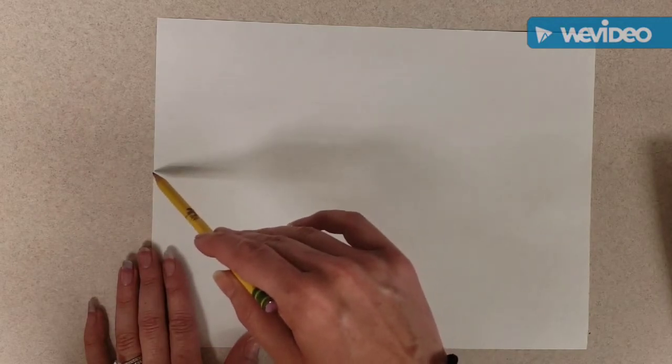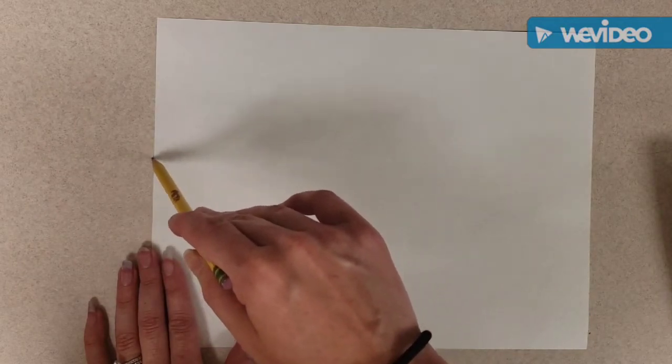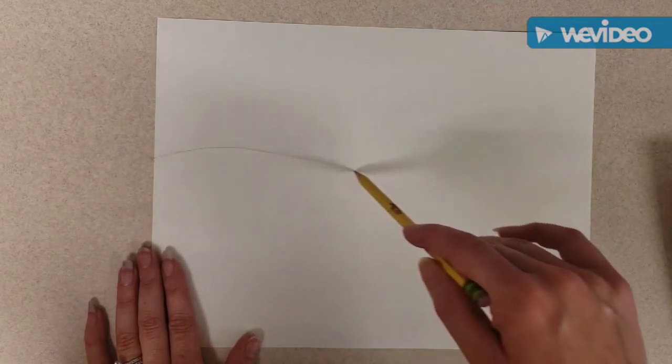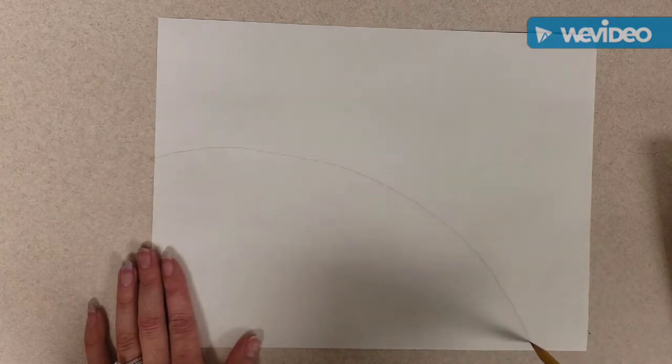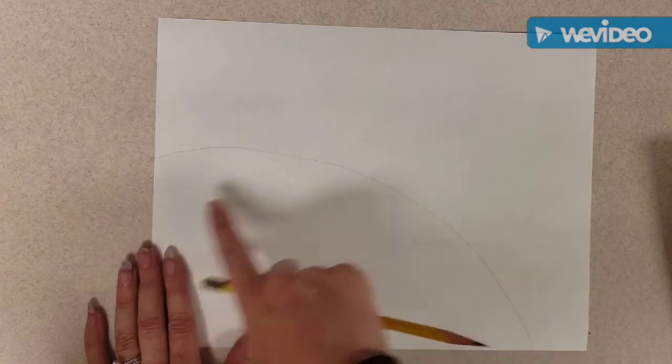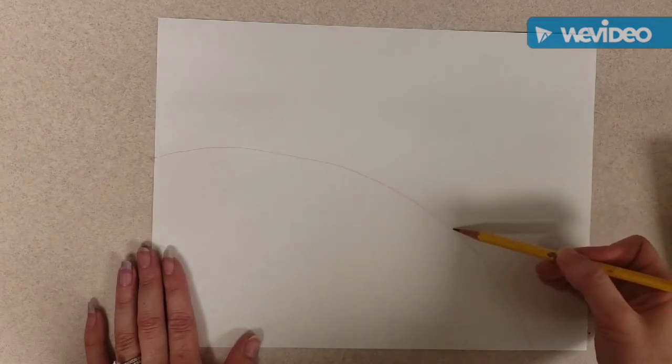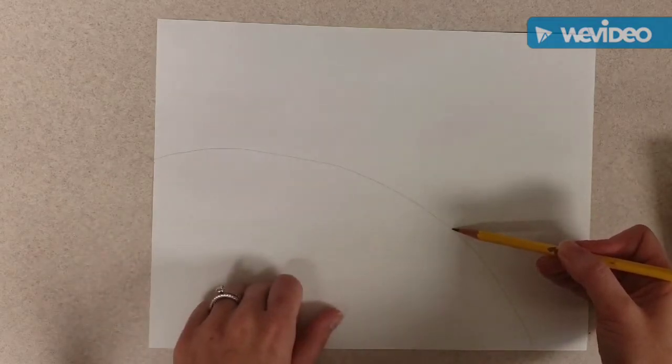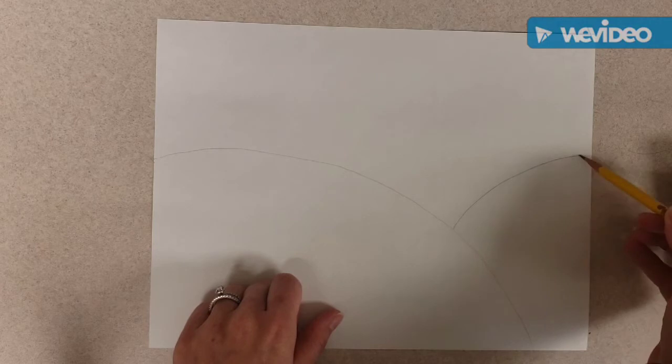I think I want to start with some hills though. So I'm going to start at the edge of my paper and I'm going to drag my pencil down lightly to the bottom of the page. And that's my first hill. And my second hill is just going to come from behind the first hill and go to the edge of the page.